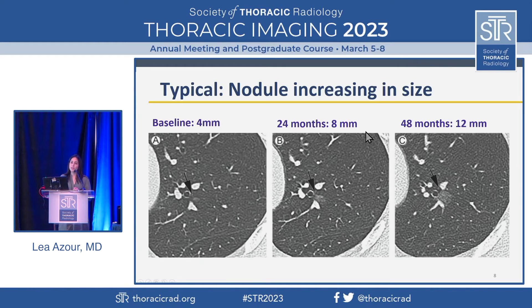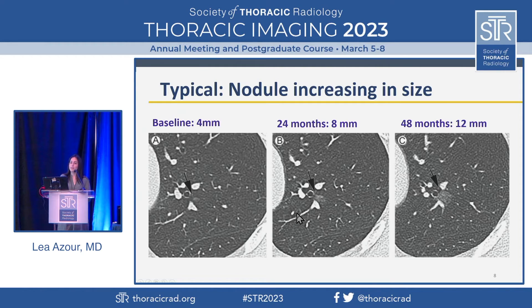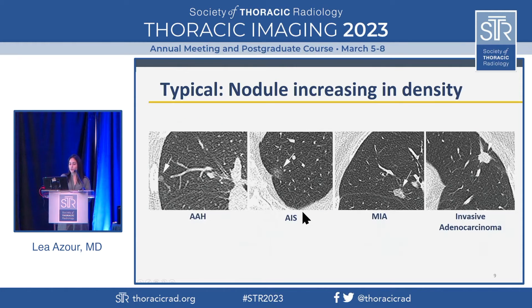Nodules that are solid have one sort of rate pattern. Subsolid nodules, or ground glass nodules, may progress much more slowly. The trajectory is still a progressive increase in size, but now it's over 24 months — this doubling in diameter. Typically, these lepidic or ground glass predominant lesions will grow more slowly, and these are adenocarcinomas.